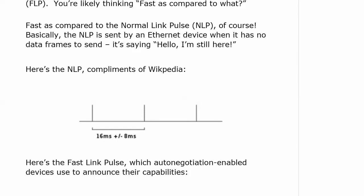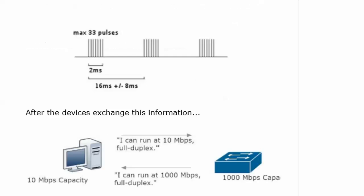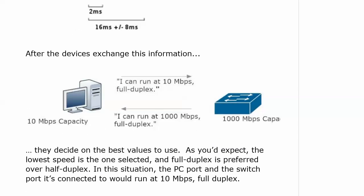The Fast Link Pulse is what all auto-negotiation enabled devices use to announce their capabilities — you can see that a lot more pulses are being sent in a 2-millisecond period of time compared to the normal Link Pulse. After devices have exchanged this information — say the host announces it can run at 10 meg full duplex, and the switch port says it can run at 1000 meg full duplex — they decide on the best values to use.